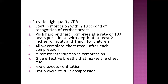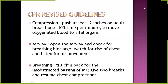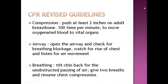The compression-to-breath cycle ratio should be 30:2. According to revised guidelines, compressions should be at least 2 inches deep on the breastbone at 100 times per minute. This helps move oxygenated blood to vital organs — heart, brain, kidney. The airway should be opened and checked for blockage; rise of the chest and air movement should be observed. Chin-lift and head-tilt should be followed to allow unobstructed passage of air. Give two breaths and then resume chest compressions.